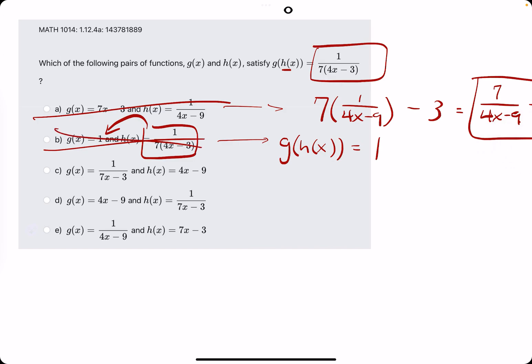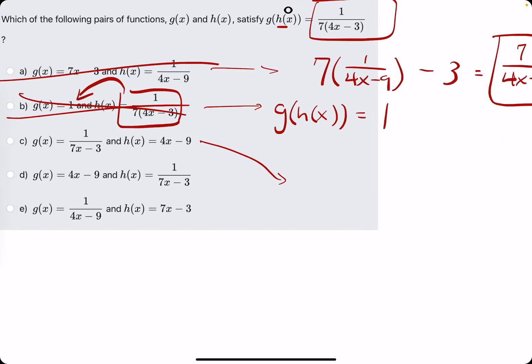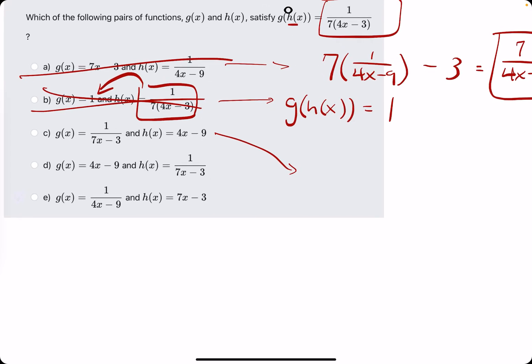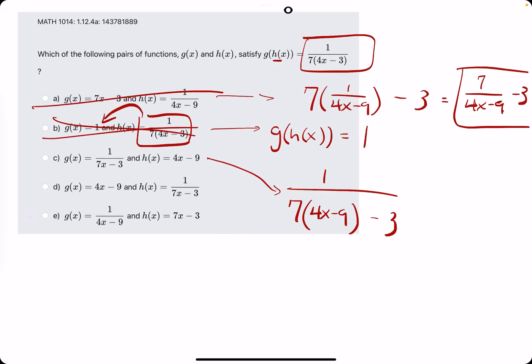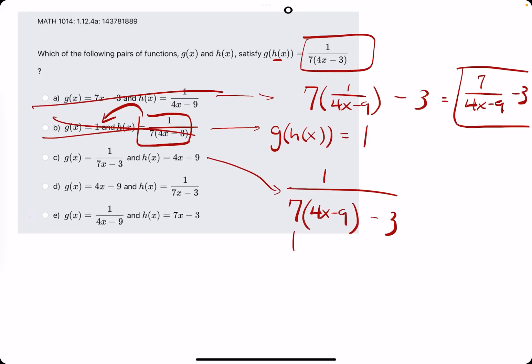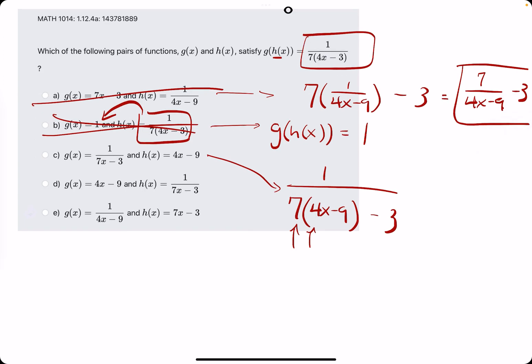So now let's try option c here, spread out a little bit. We're plugging in h of x into the function g. So g is 1 over 7 times x minus 3. So 4x minus 9. Okay, so we might have a contender here because we see a 7 times a 4 in the denominator, just like the original one has. So I'm going to leave it like that for now.